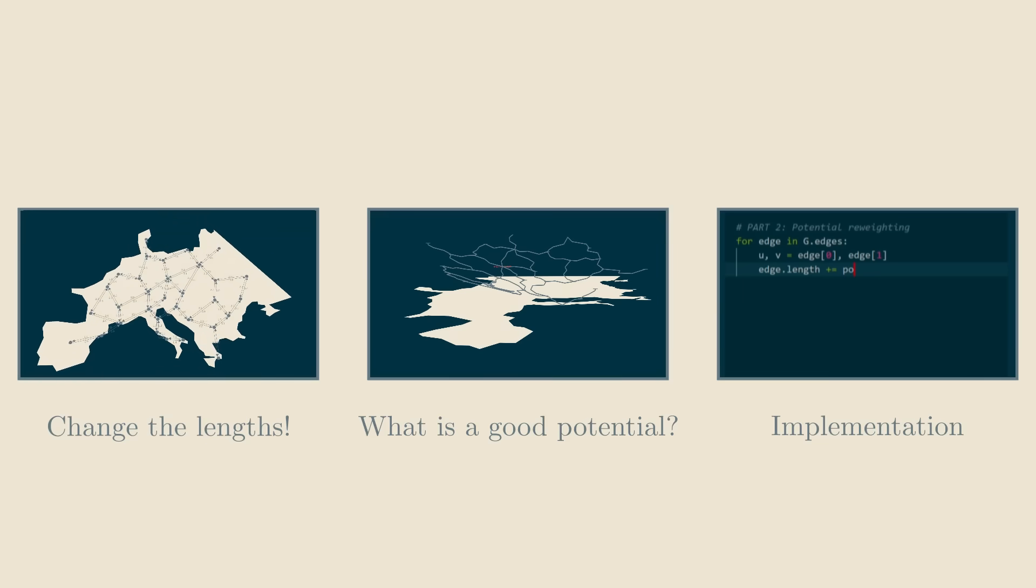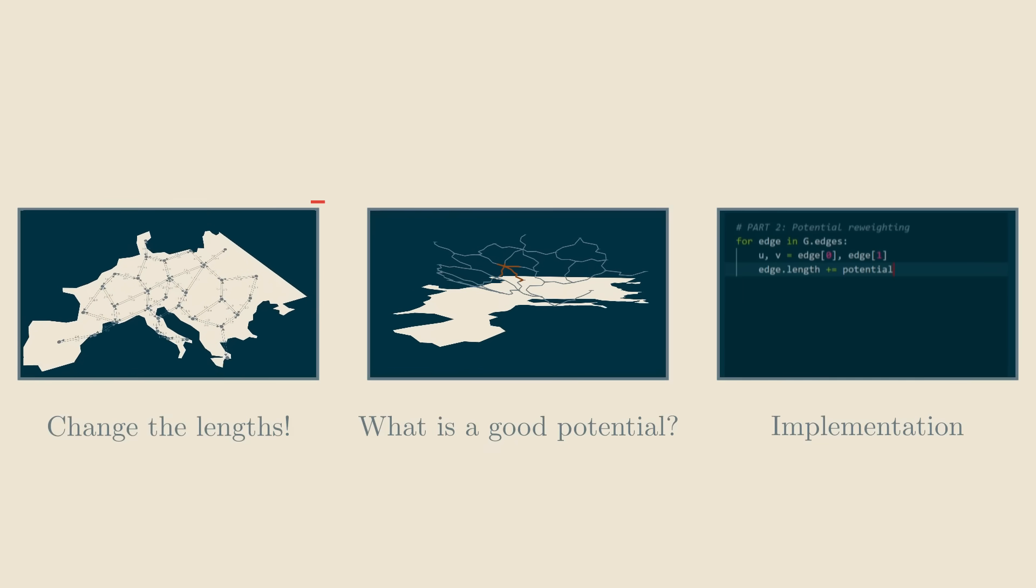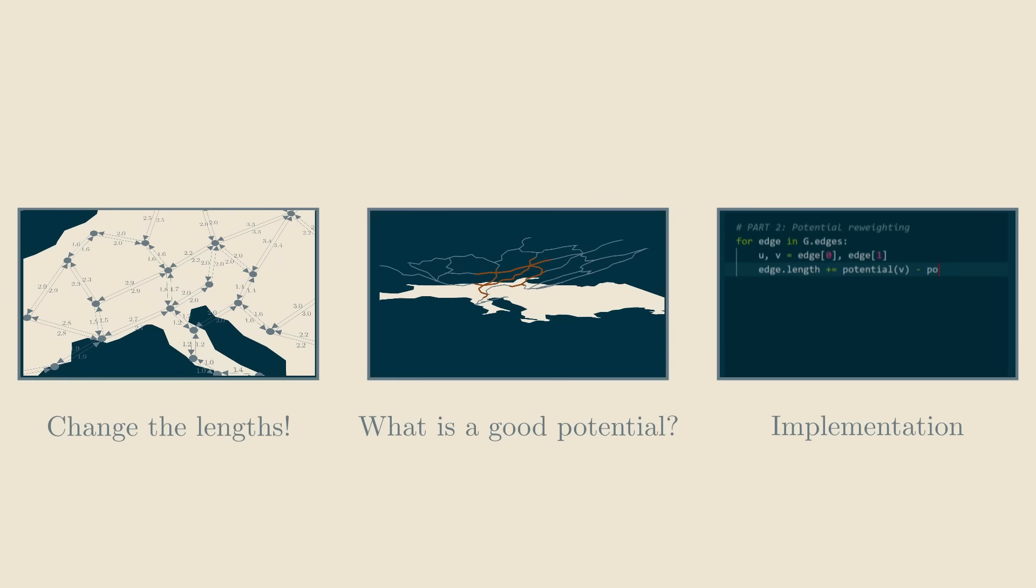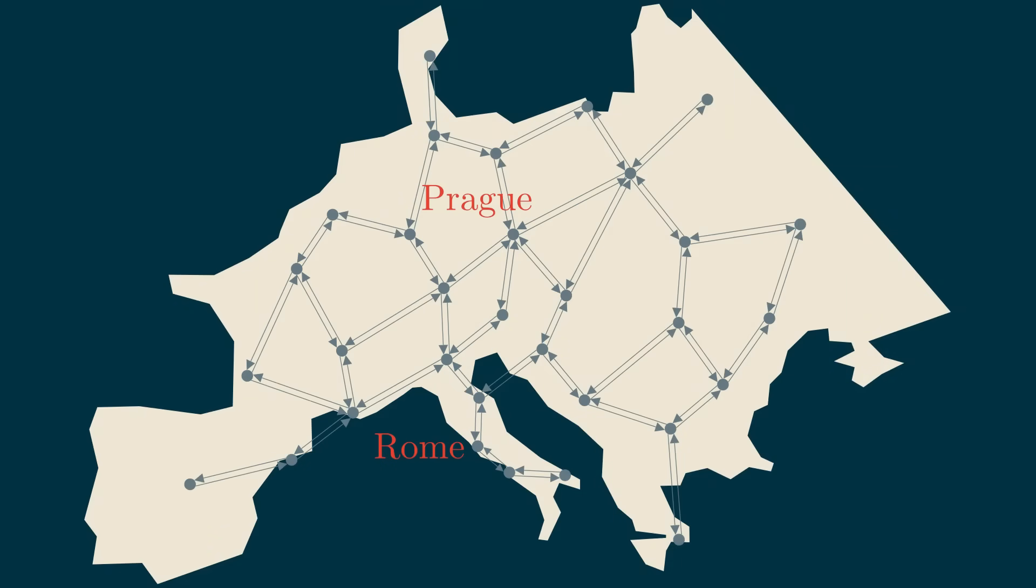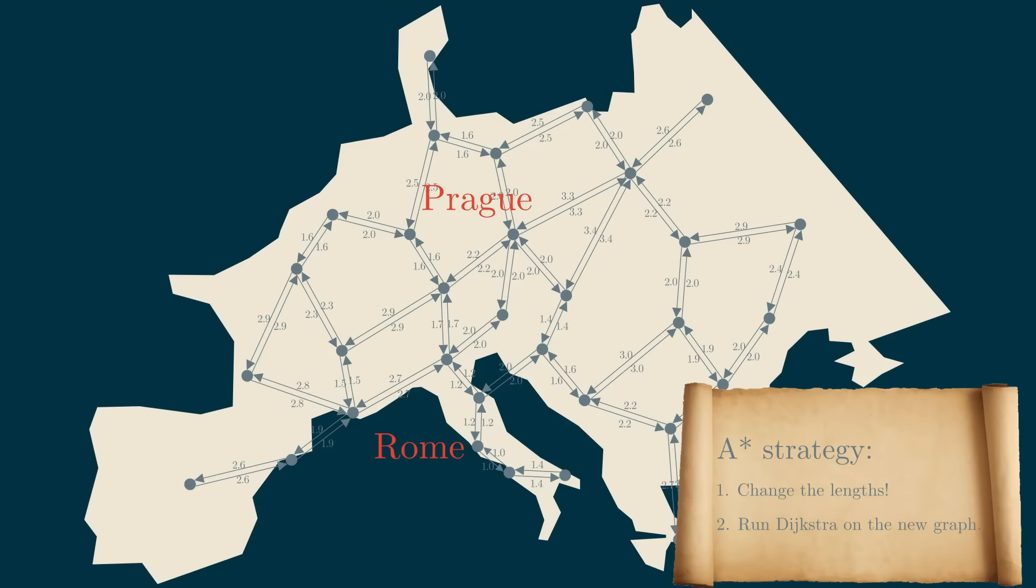I will explain the algorithm in three parts, and in the first one I want to tell you what is, for me at least, the most important idea behind A-star. First, let me think of the graph as a directed graph, with every edge having a non-negative length. The main idea is that we will simply change the edge lengths in our graph, and then run Dijkstra's algorithm on that new graph.